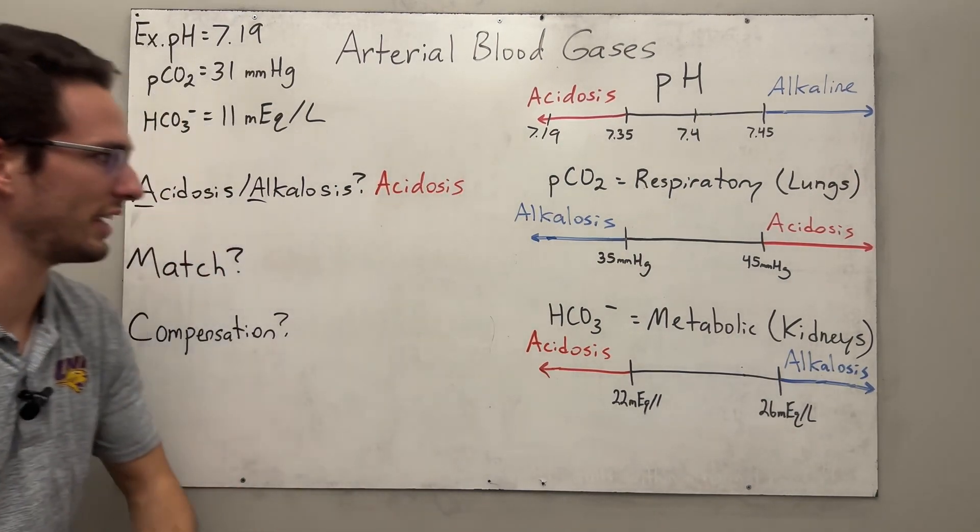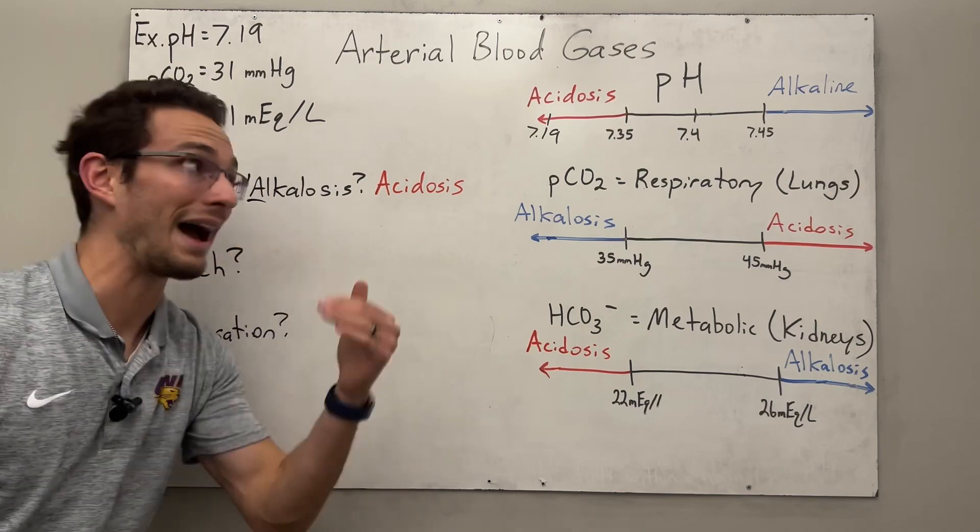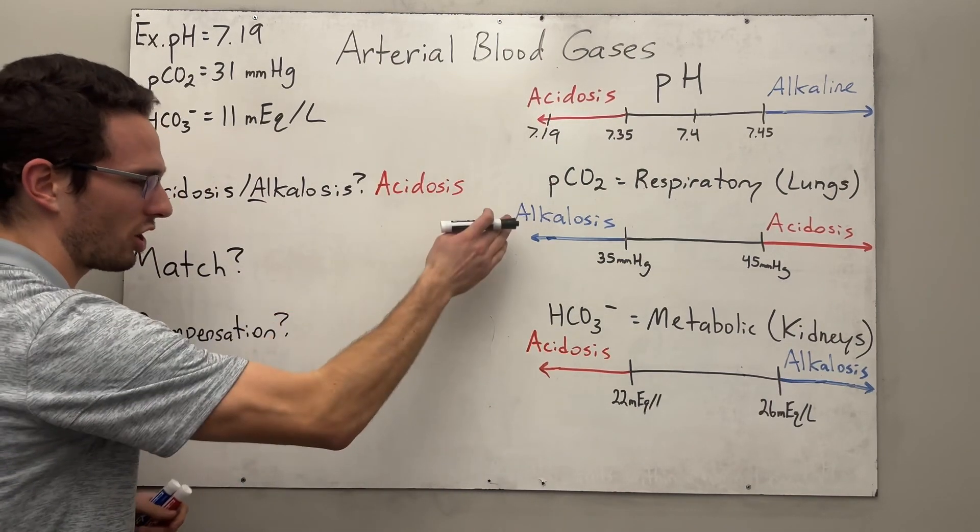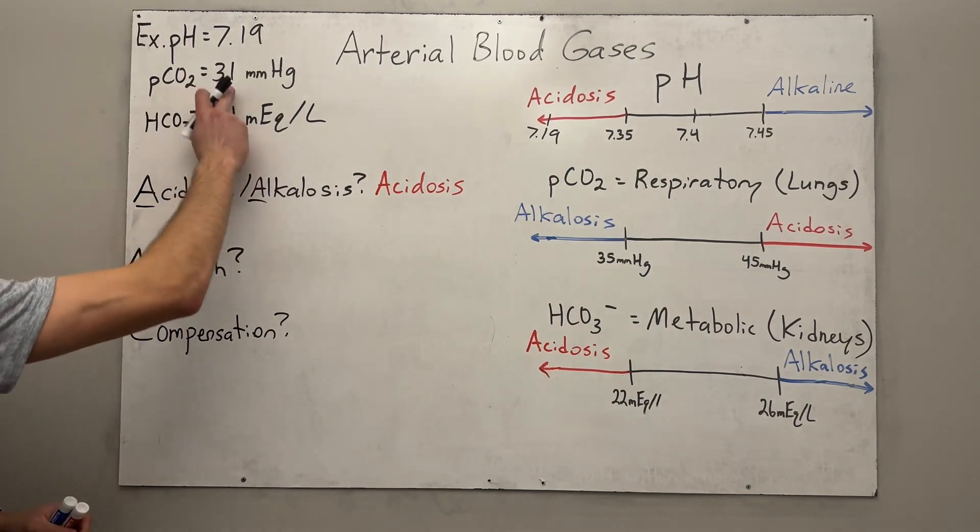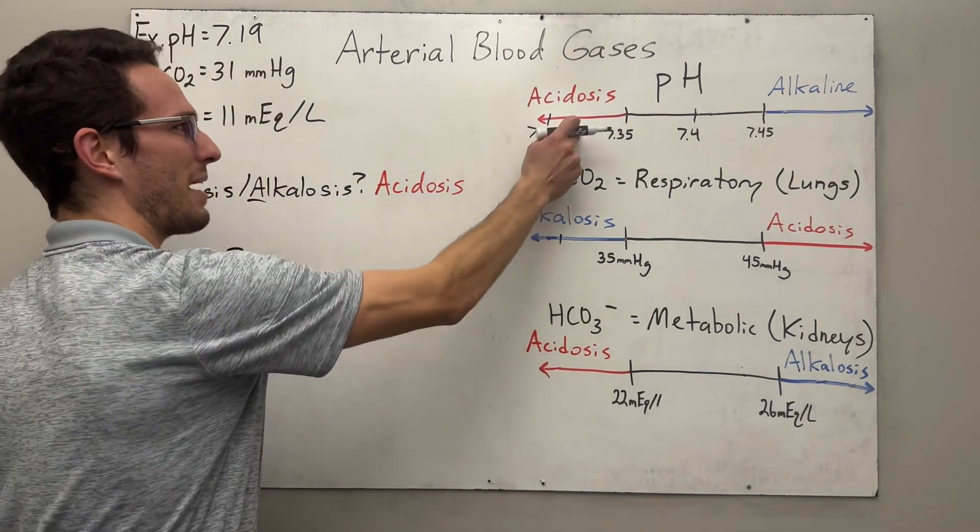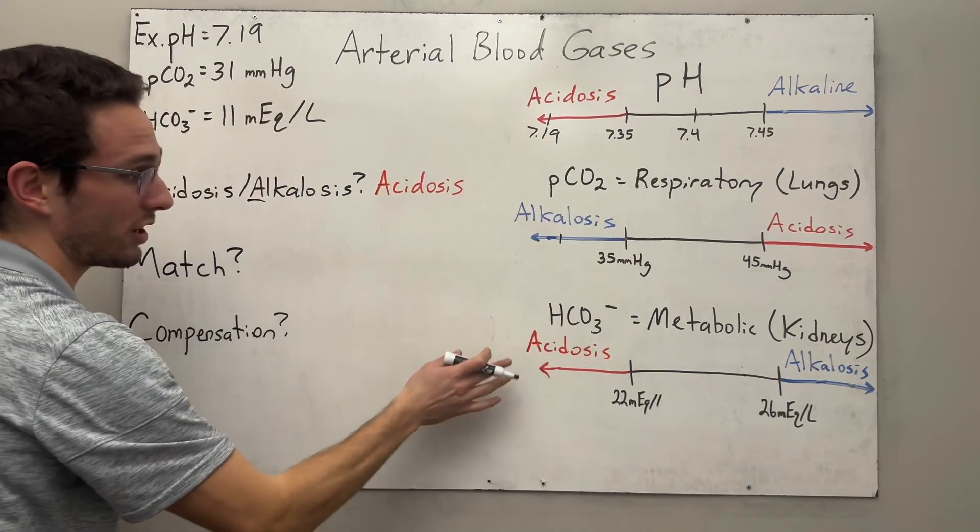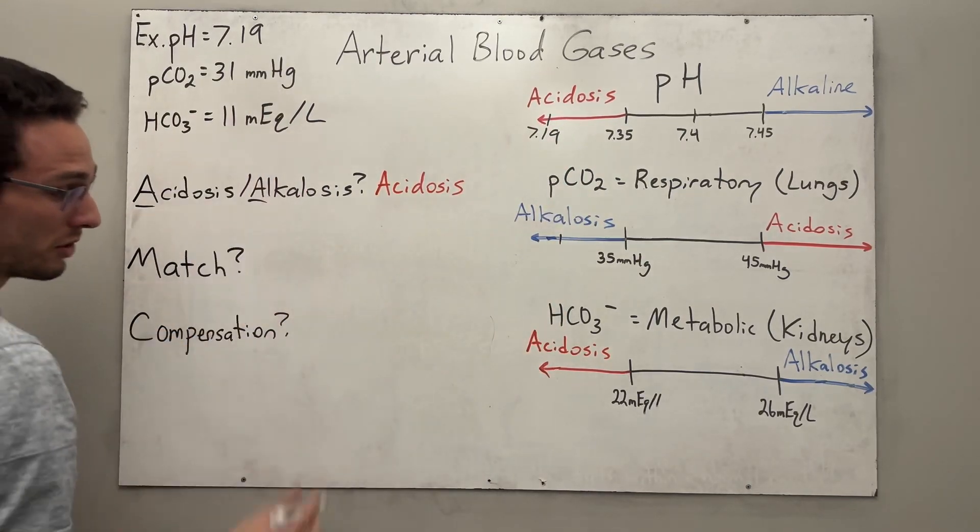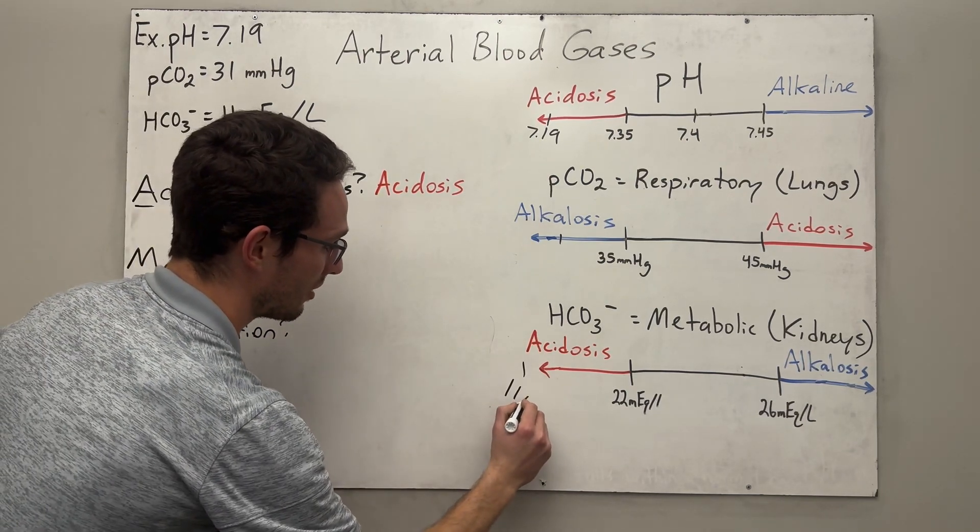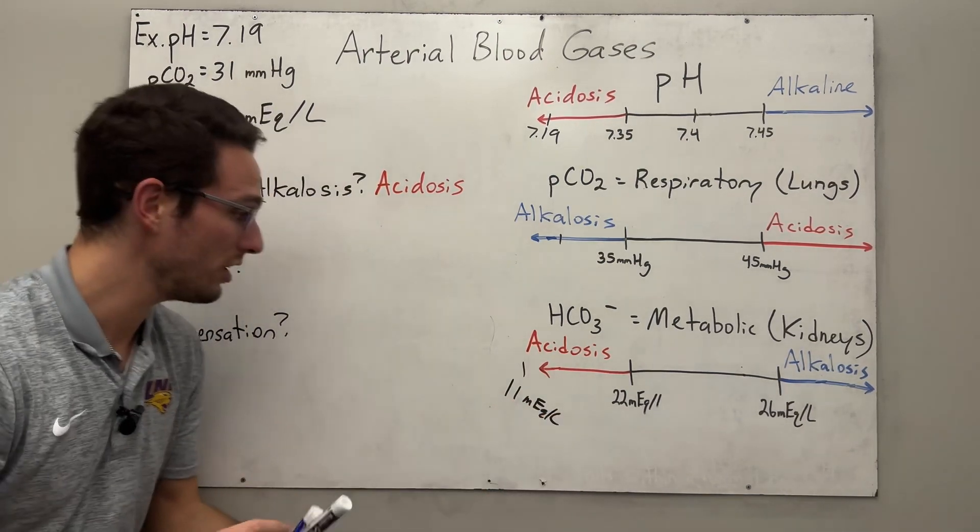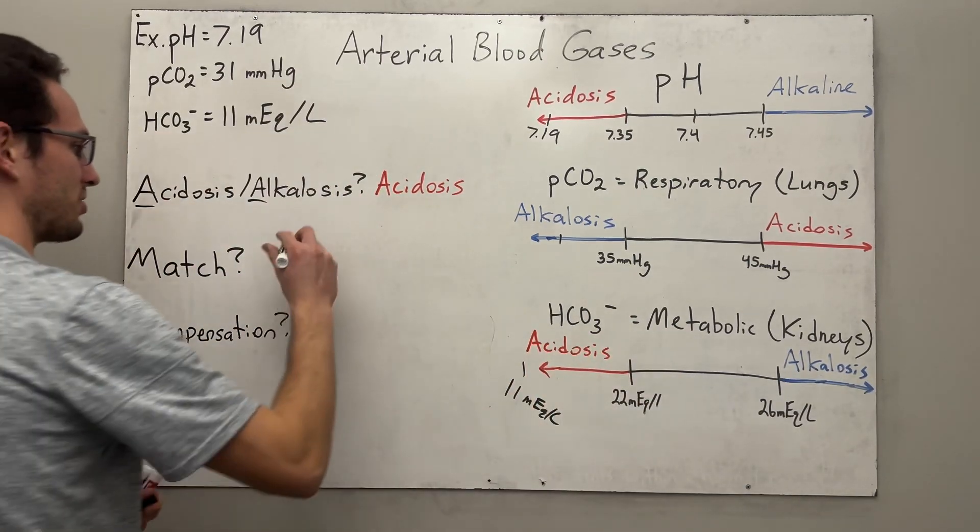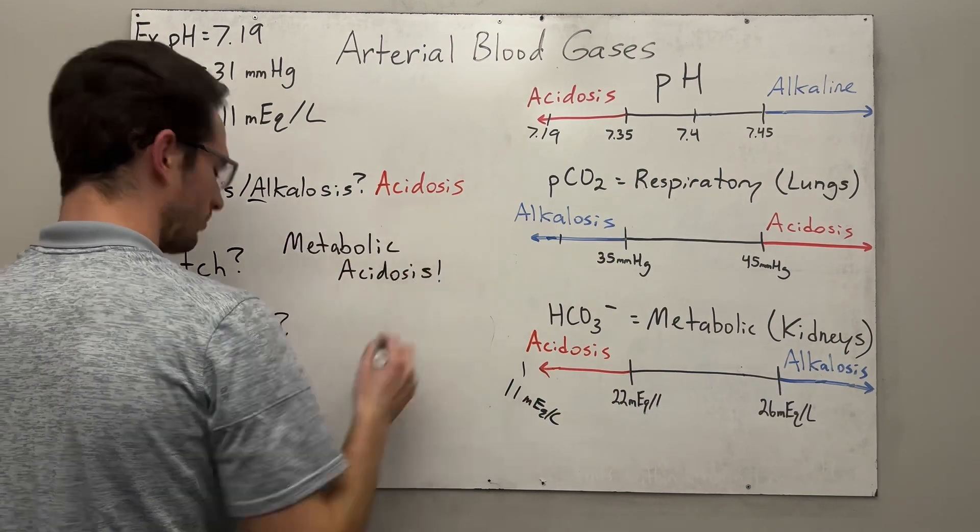And now we're looking for that match. We're looking at the value that is going to match our acidotic state. And always we start with carbon dioxide. So let's look at carbon dioxide. It is at 31. So 31 would actually be alkalotic. So that does not match our acidotic state. So let's look at bicarb. Bicarb is 11, which 11 would fall way the heck over here in very acidosis state. So now we know that the acidotic state is caused by a metabolic issue. So it's metabolic acidosis.